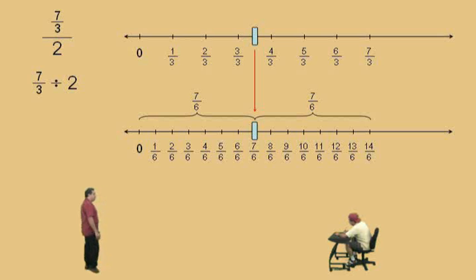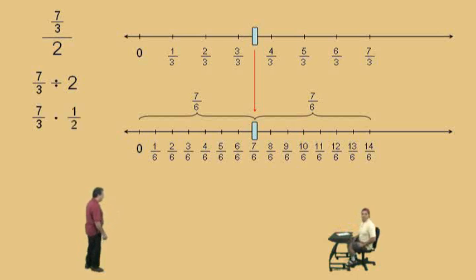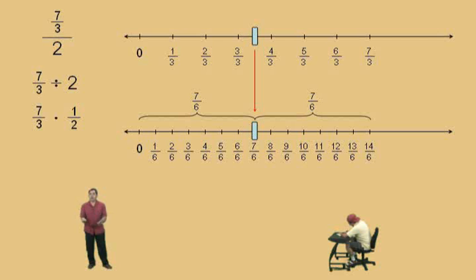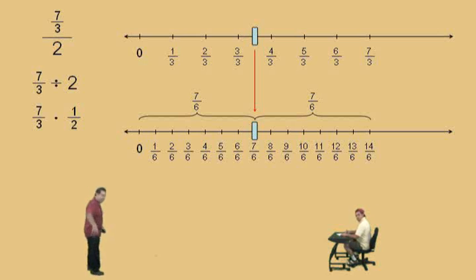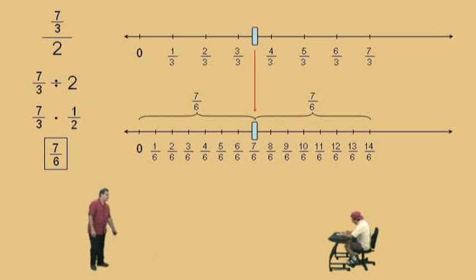What do we do, Charlie? Bring down our 7/3, change the division to multiplication, and now how do you write 2 as a fraction? 2 over 1. And then when you take the reciprocal, what do you get? 1 over 2 — one half. So the reciprocal of 2 was 1/2, because how many 2s go into a 1? It's a half of a 2. How do we multiply fractions? Straight across the top, straight across the bottom. And what's our answer? 7 over 6.